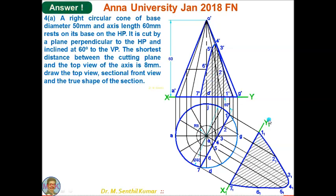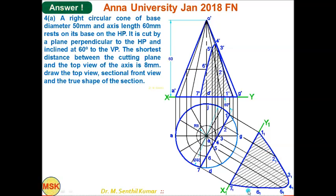For the true shape of the section: draw X1Y1 reference line parallel to the cutting plane line. Draw lines perpendicular to X1Y1 from each cutting point. For example, to get point 2₁, take the height of point 2-dash in the front view from XY, then cut an arc from the intercept on X1Y1 to get point 2₁. Follow the same procedure for points 3, 4, 5, 6. Points 1 and 7 lie on X1Y1 itself. Complete the profile and hatch both the sectional front view and the true shape.